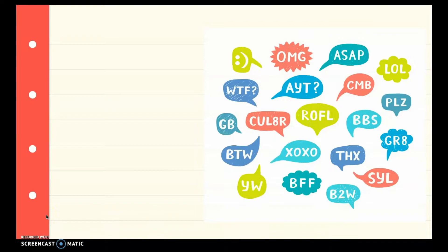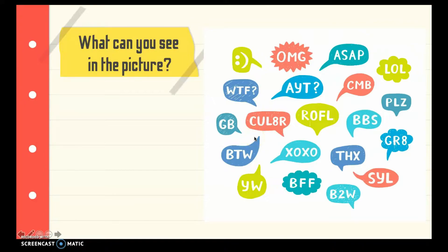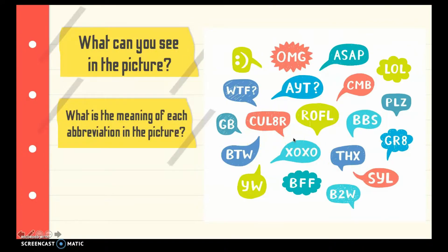Let's start our lesson by identifying what's in the picture. These are abbreviations used in writing or texting. Some examples include: OMG (oh my god), ASAP (as soon as possible), LOL (laugh out loud), TY (thanks), BFF (best friends forever), and YW (you're welcome).